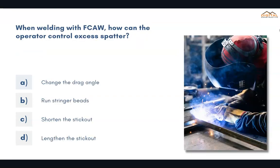When welding FCAW, how can the operator control excess spatter? The correct answer is C: shorten the stick out.